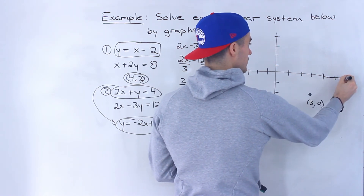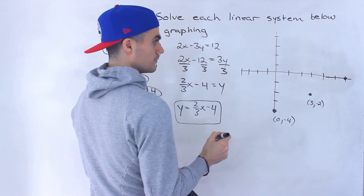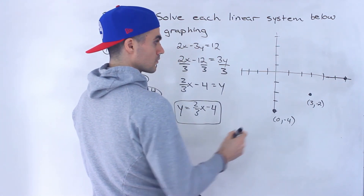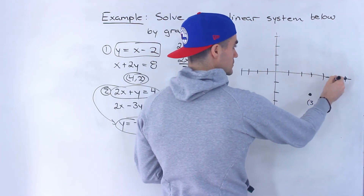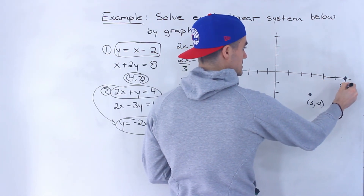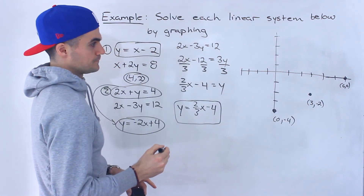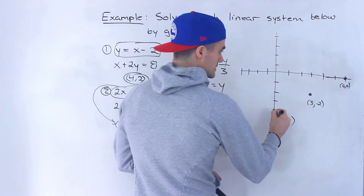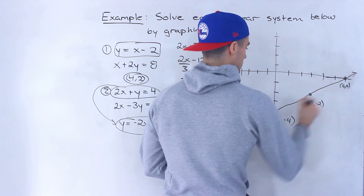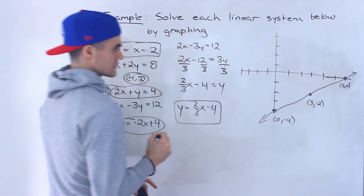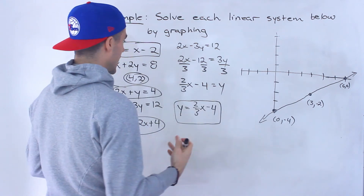So this would be at six and zero. This line, if we connect the dots, looks like that. We have a couple of points, and if we need more points we could add them.